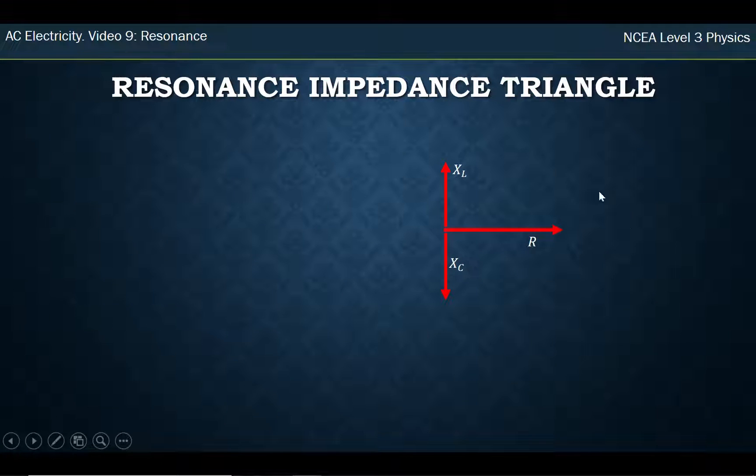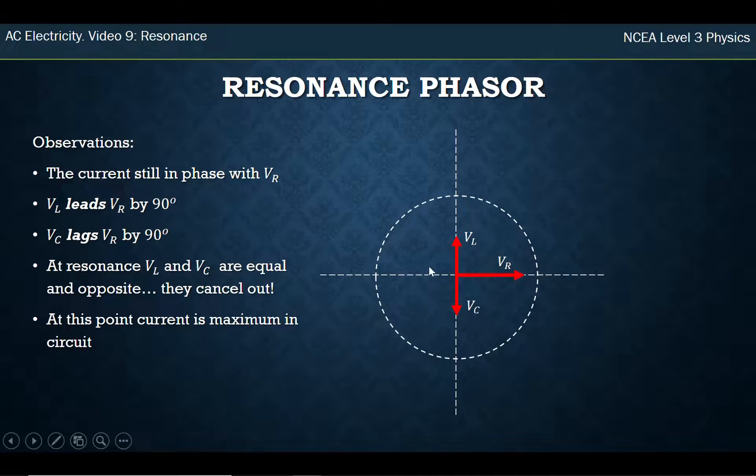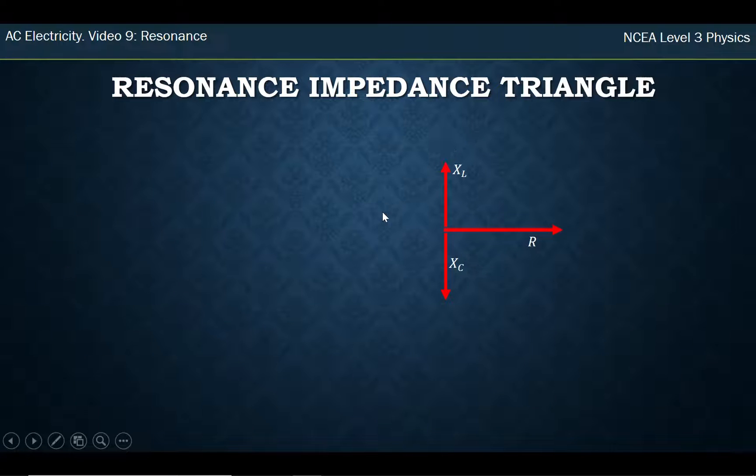And so my impedance triangle, remember impedance triangle is a separate diagram with the resistances and the reactances. It has the same relationship as these in terms of directions and ratios of sizes. And here, when we have resonance, we have both of these guys equal.